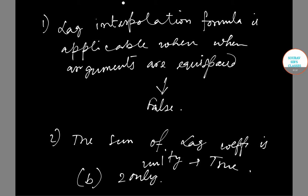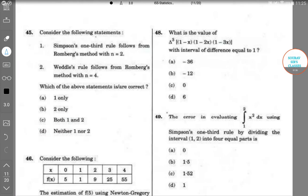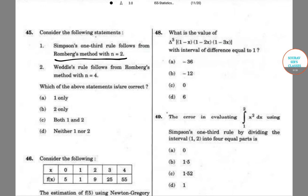The next question is question number 45. In question number 45, we are given some statements again. In consideration number one, we have that Simpson's one-third rule follows from Romberg's method with n equals 2, and Waddle's rule follows from Romberg's method with n equals 4. We have to check which is correct.